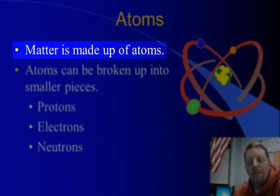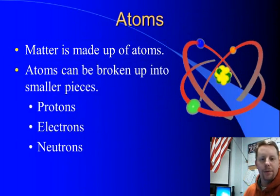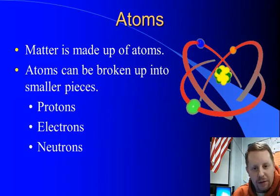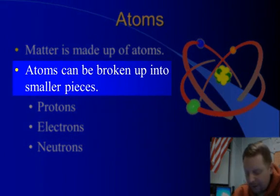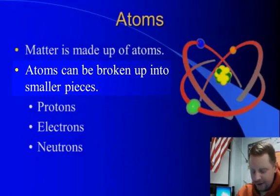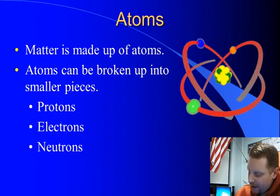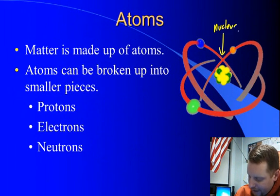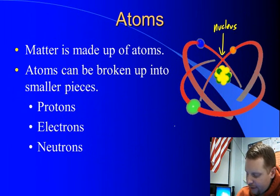Matter is made up of atoms, and for many years people thought atoms were the smallest particle of matter possible. We have since learned that that's not true. We can break up atoms into smaller pieces known as protons, electrons, and neutrons. Now, protons and neutrons reside in the nucleus, in the very center of an atom, and electrons orbit the outside of the atom in what we call energy levels.